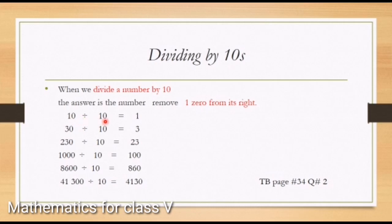Second question: 30 divided by 10. We have one zero in 30 and one zero in 10. By the definition, we remove one zero from the right and the answer will be 3. You can see that the answer of dividing by 10 is the decreased value in the question.